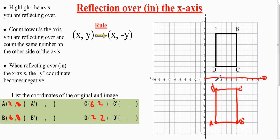So now you can put the coordinates down of the image. D' is at 2, negative 2. Sorry, that's D'. C' is at 6 over to the right, negative 2 down.